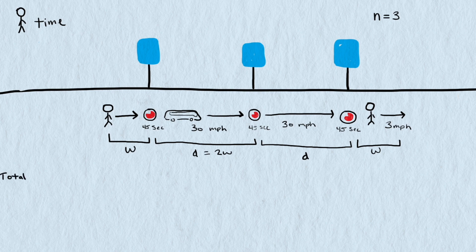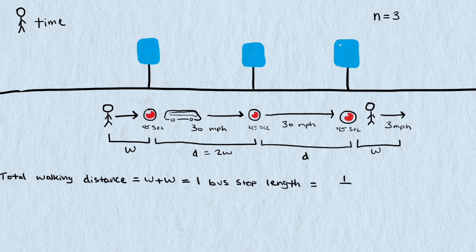The total walked distance is the same as the distance between two adjacent stops. The three stops split the road into three equal pieces. Two sections between the three stops and the walking distance of both ends.